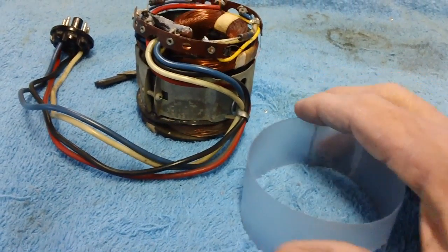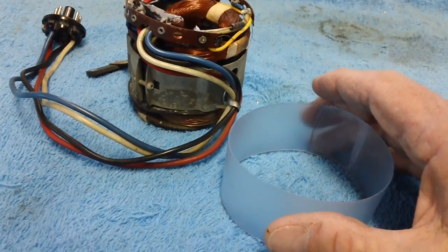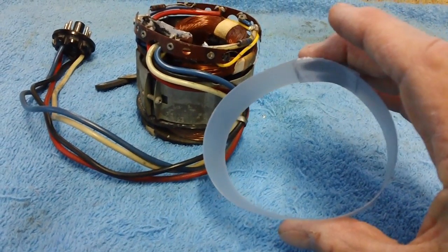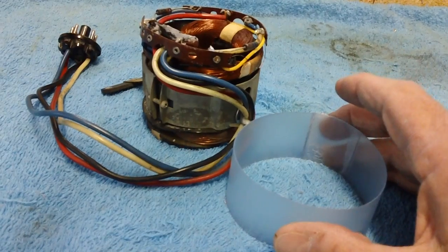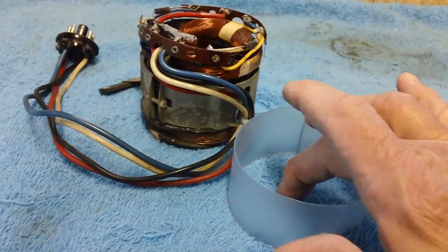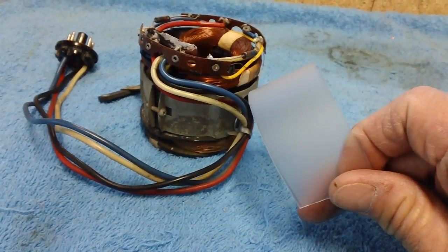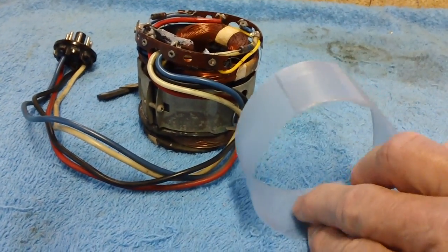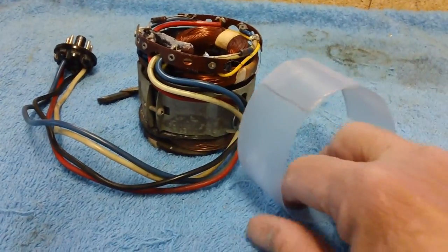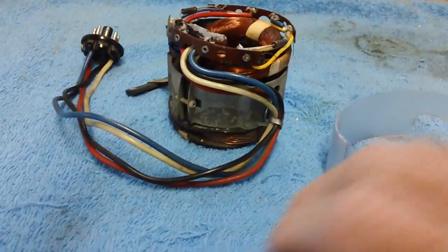I used them to insulate coils on the Atwater Kent radio that we restored a couple years ago. The coil sat on the chassis and the old insulators were worn out. So we just cut nice new round ones and put them down in the chassis and set the coil right on top of it. It worked really well. It's just about anything you can think of. You need an insulator, this is the thing to do it.